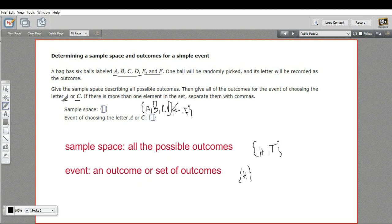And we want to give all the possible outcomes for that particular event. Well, so you've picked either A or C. One possibility is that you picked A. The other possibility is that you picked C. So we would write it like that.